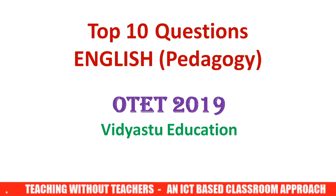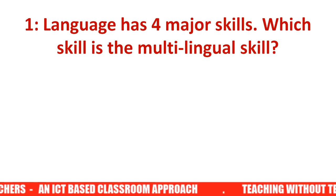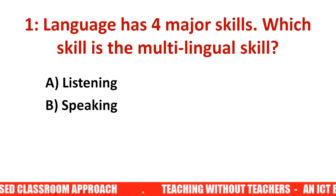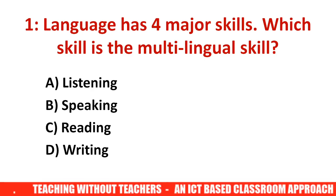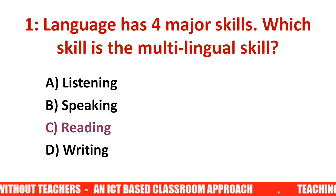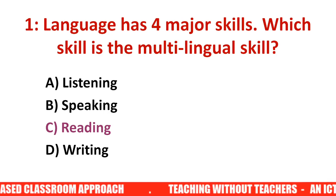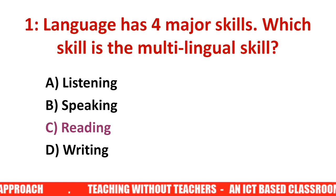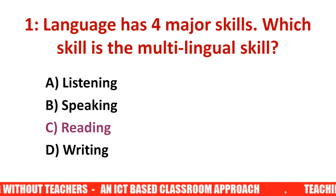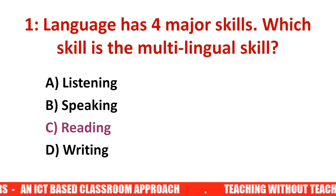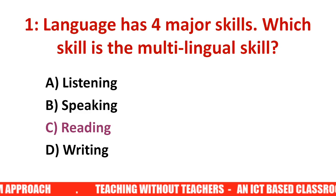First question: Language has four major skills. Which skill is the multilingual skill? The options are listening, speaking, reading, and writing. The right answer is reading. Reading is multilingual because it requires eye-hand coordination, understanding the script, forming pictures in your mind — you are using multiple skills simultaneously: watching, finding scripts, recognizing letter structures. Therefore, reading is called the multilingual skill.